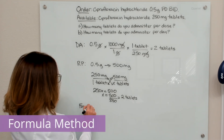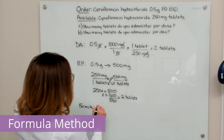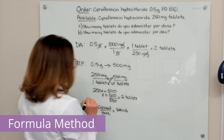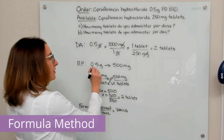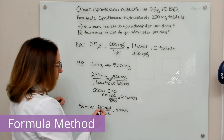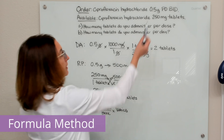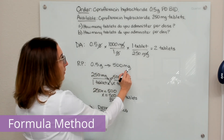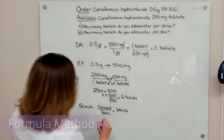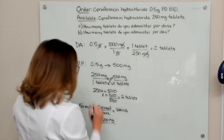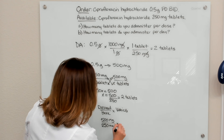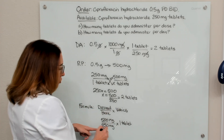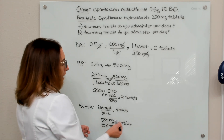Lastly, let's do this problem with the formula method. The formula method is desired over have, times the vehicle. When we're using this method, we have to convert our units just like we did with ratio and proportion — I need to make sure my desired and have are the same units. Right now my desired is in grams and what I have is in milligrams, so I would need to convert that 0.5 grams to 500 milligrams. Now I'm ready to plug that into the formula: desired is 500 milligrams, have is 250 milligrams, and my vehicle is one tablet.